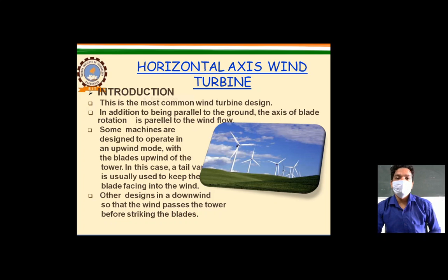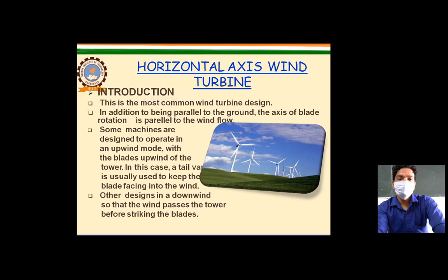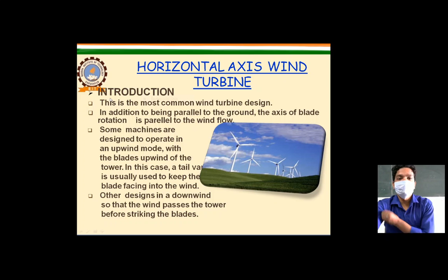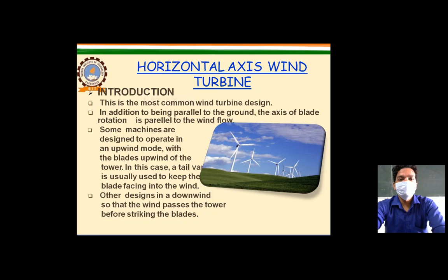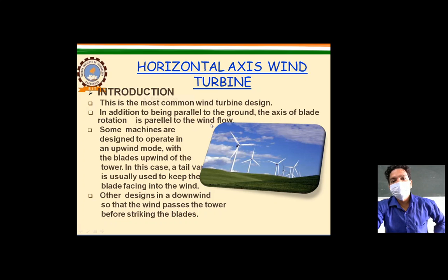The horizontal axis wind turbine is the most common wind turbine design. This was the base for the generation of wind turbine technology. In this design, the axis of blade rotation is parallel to the ground and parallel to the wind direction.